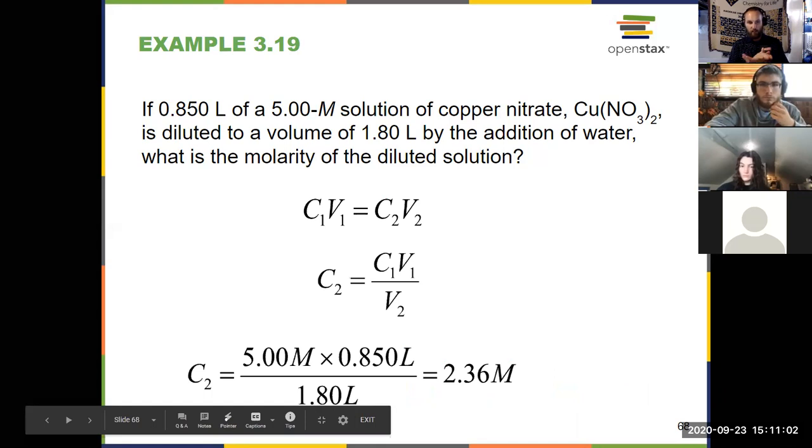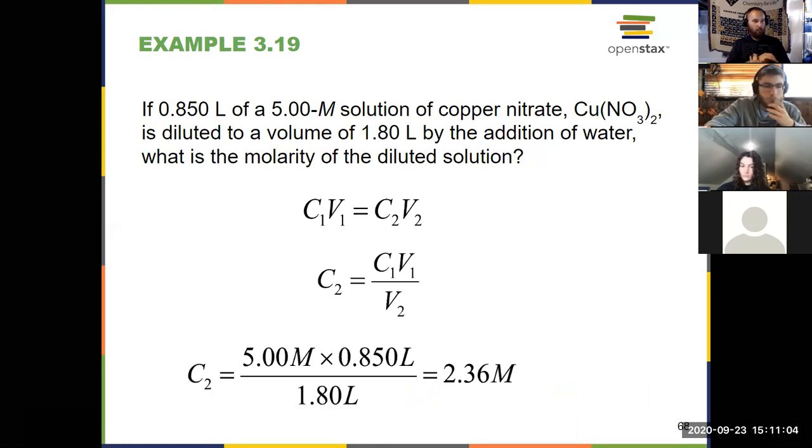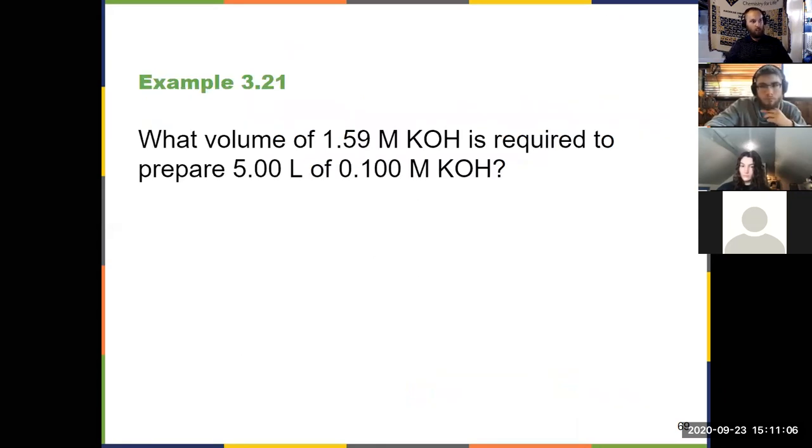Again, I recommend you try these on your own. There's another example on the next slide, 69 here. Example 3.21 asks us what volume. Now we're going to solve for a volume instead of a molarity. What volume of 1.59 molar KOH is required to prepare 5 liters of 1 molar KOH? Same equation, M1V1 equals M2V2. Just make sure to match them together correctly. Solve for the volume. And that's dilutions.